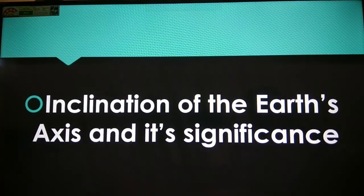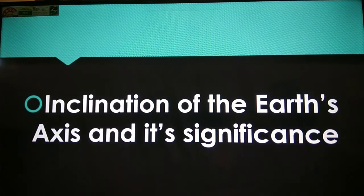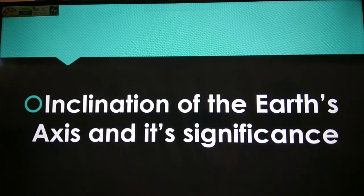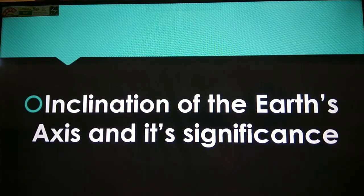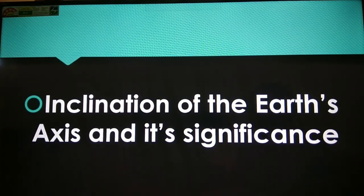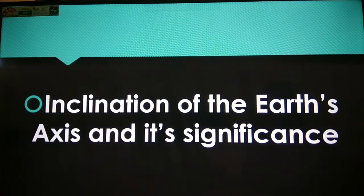So I hope you understood how rotation is the main cause of day and night, sunrise and the Coriolis effect. Now we are going to read the next topic: the inclination of earth's axis and its significance. As we have said, rotation is the spinning of the earth on its axis from west to east, and the axis is an imaginary line passing through the center of the earth. A very important point is that earth's axis is not a straight vertical line — it is tilted at an angle of 23 and a half degrees.